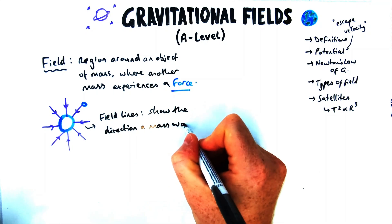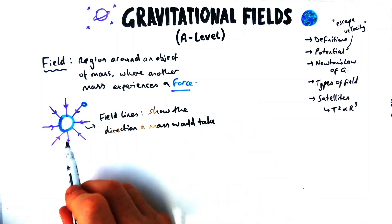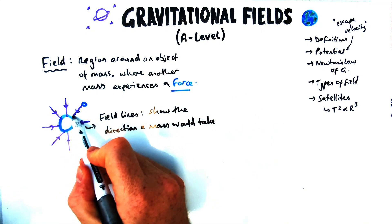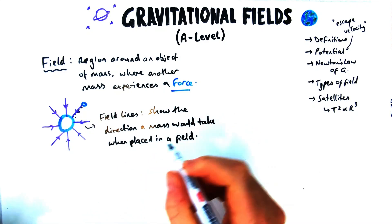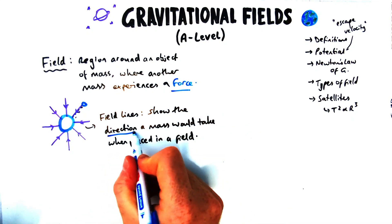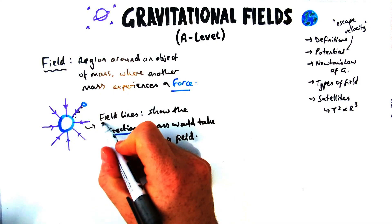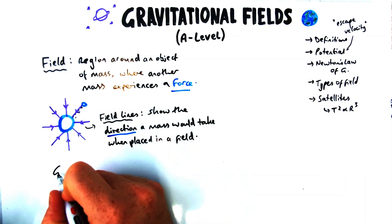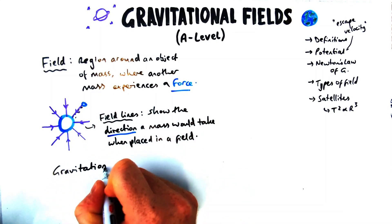Now, what about field lines? These things drawn here act towards the object. Field lines show the direction a mass — or a test mass — would take when placed in that field. So here, the mass is going to go towards the planet, indicated by the arrow shown.